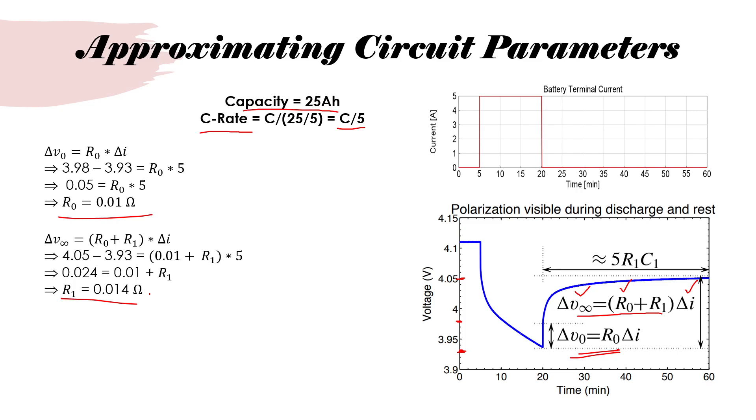Now, you can make an approximation and it's a thumb rule that it takes roughly 5 time constants for the voltage to stabilize. In order to go from this to this, it takes roughly 40 minutes which can be equated to 5RC. RC represents time constant. So it takes 5 time constants to stabilize. Now, we know R1, we know this distance which is 40 minutes. 40 minutes can be equated to 5 times R1 C1 to get C1.